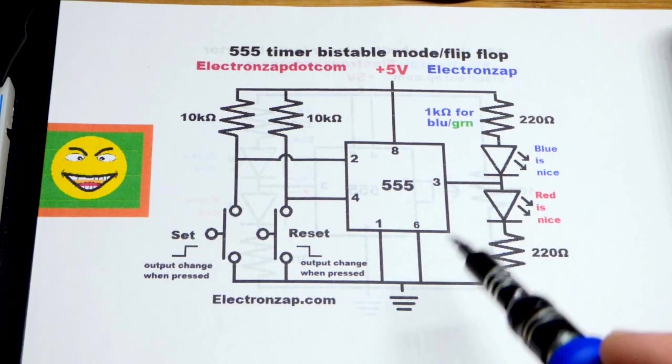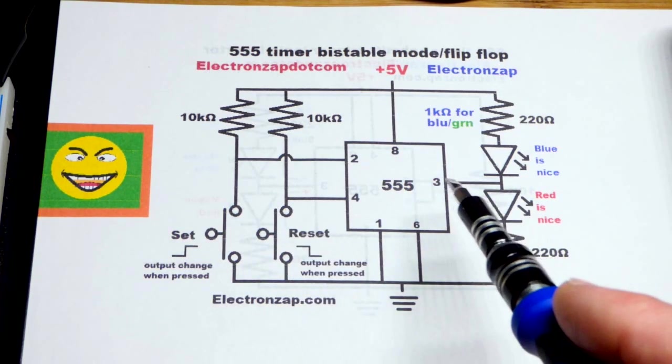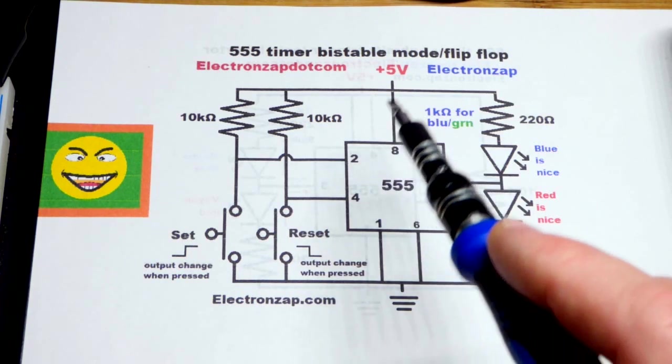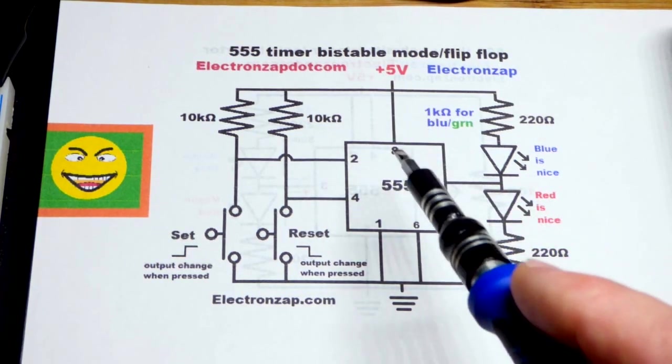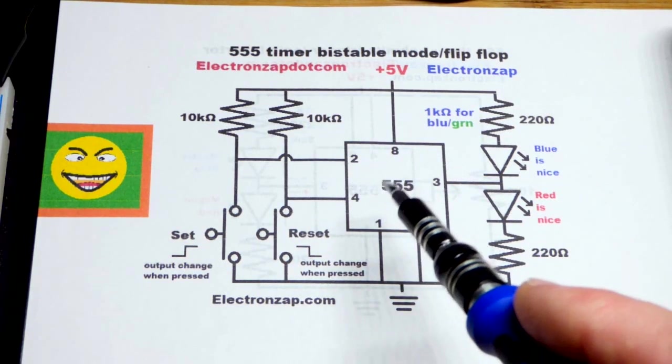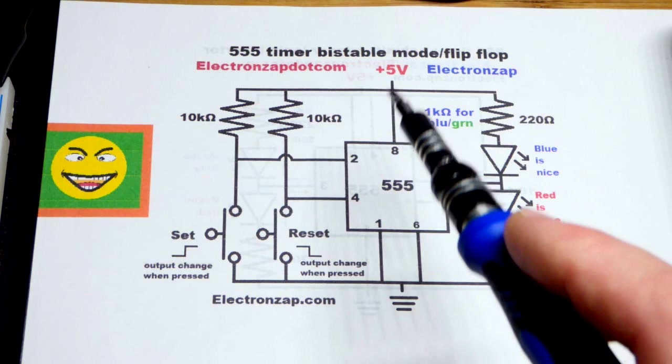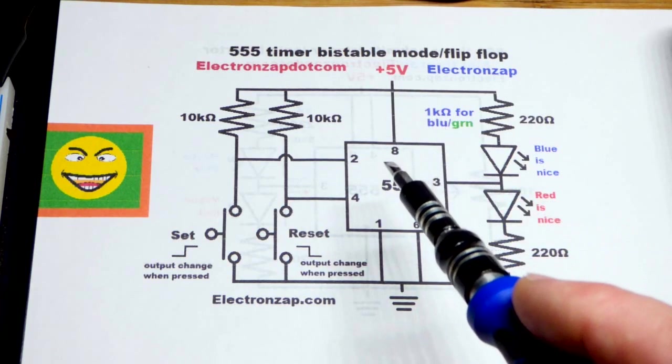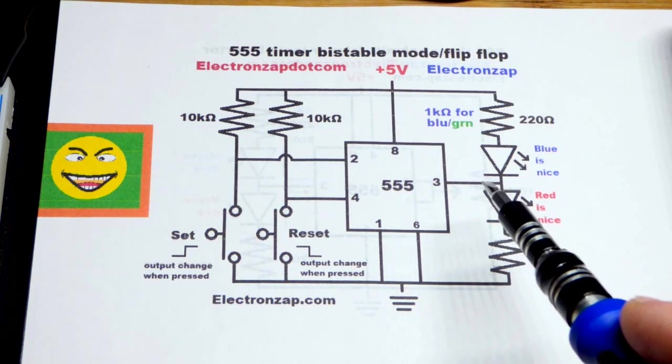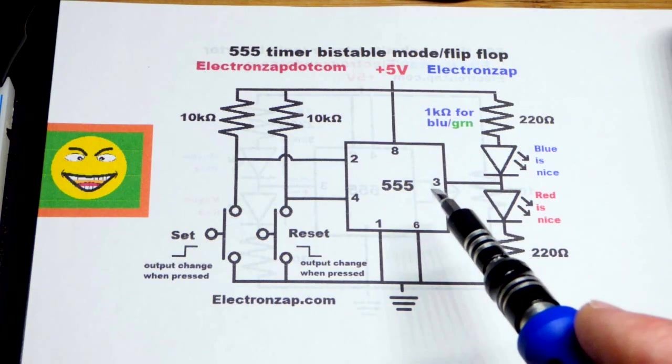If we press the set switch the output will be high. If it was low it'll flip high. If it's already high it just stays high. We're going to use the NE555, and most 555s like the NE555 don't get all the way to the positive supply. It's about three and a half volts probably if you're using five volts, falls about a volt and a half short.